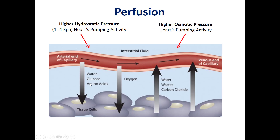In the first half, the flow from blood to tissue will contain water, glucose, amino acids, and oxygen — that is, oxygen, nutrients, and water.